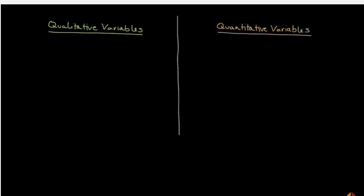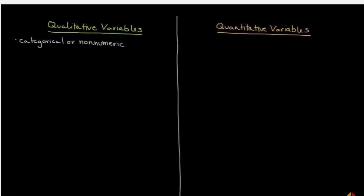A good way to think about qualitative variables is the first four letters of the word 'qual' standing for quality. By quality, we're referring to the actual type of something, as opposed to how many or an exact numerical value.